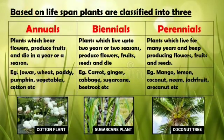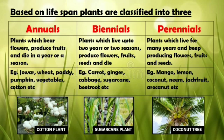Based on lifespan, plants are classified into three types: annuals, biennials and perennials. Annuals are plants which bear flowers, produce fruits and die in a year or a season. Examples include jowar, wheat, paddy, pumpkin, vegetables, cotton, etc. The picture shown is a cotton plant.